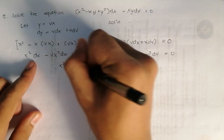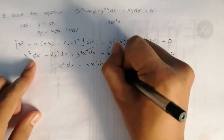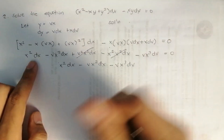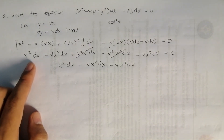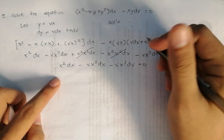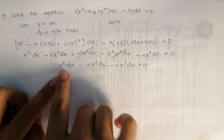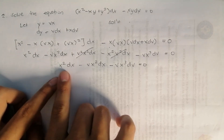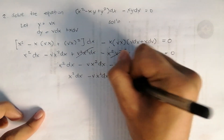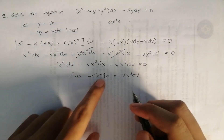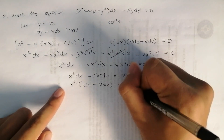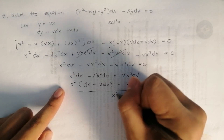After cancelling like terms, we get: x² dx minus vx² dx minus vx³ dv equals 0. Factoring out x²: x²(1 minus v) dx equals vx³ dv. Dividing both sides by x², we get: (1 minus v) dx equals vx dv.